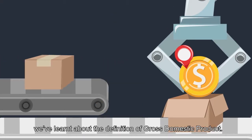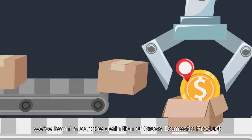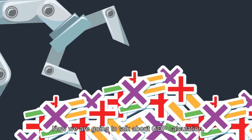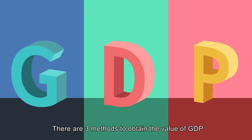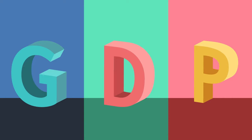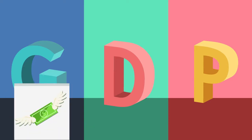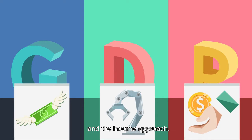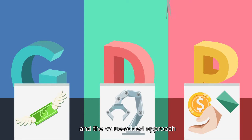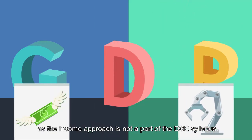In the previous video, we learned about the definition of gross domestic product. Now we are going to talk about GDP calculation. There are three methods to obtain the value of GDP: the expenditure approach, the value-added approach, and the income approach. We will only focus on the expenditure approach and the value-added approach, as the income approach is not part of the DSC syllabus.